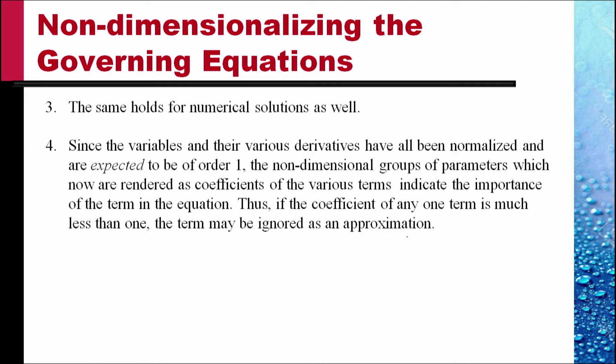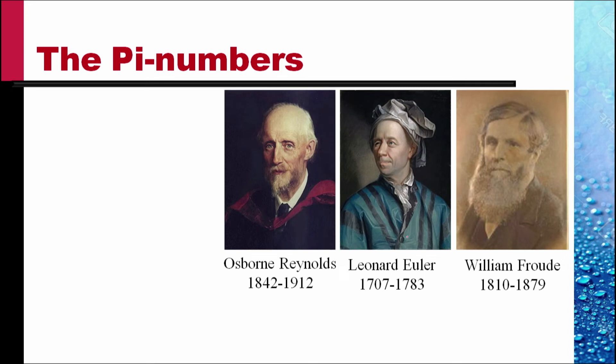Since the variables and their various derivatives have all been normalized and are expected to be order one, the non-dimensional groups of parameters — now rendered as coefficients of the various terms — indicate the importance of each term in the equation. Thus, if the coefficient of any one term is much less than one, that term may be ignored as an approximation. Consideration of this point forms the bulk of the second part of this course: the theory of approximations. The three pi numbers are named after Osborne Reynolds, a British scientist; Leonard Euler; and William Froude, another British scientist.